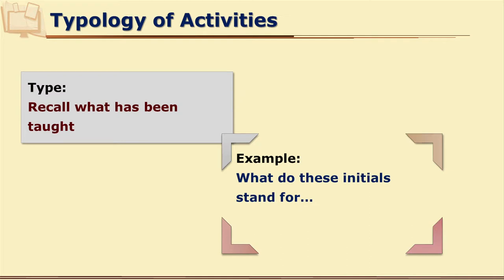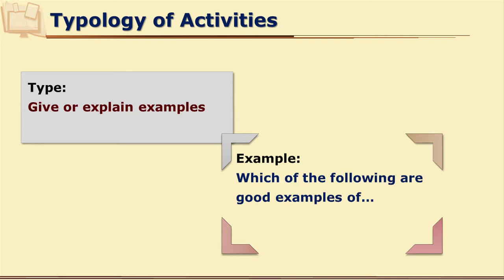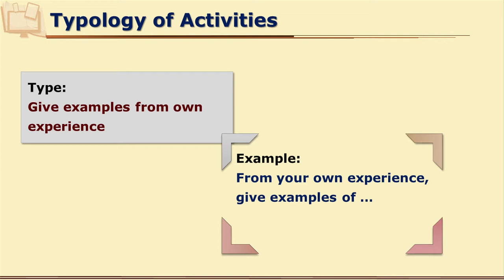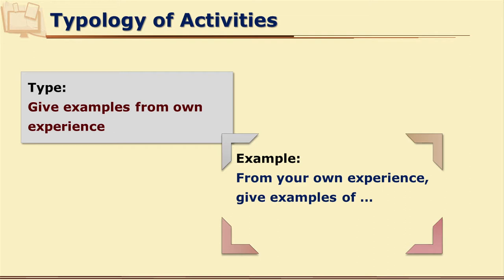You may ask them definitions. You can ask them to write meaning in their own words, or what do these initials stand for. They can either give their own examples or identify examples from a given list — for example, which of the following is the correct example of concept ABC. You may explain a concept and give several examples in ODL material, but ultimately tell them to write their own examples. For example, if giving examples of teaching strategies, you may ask what strategy they would use to teach particular content in class. Another type is application of concepts or rules — tell them to apply a formula and solve a problem.